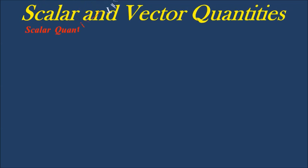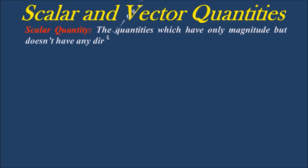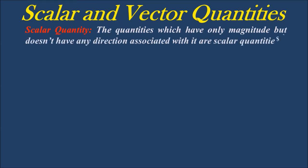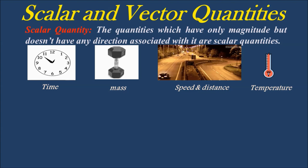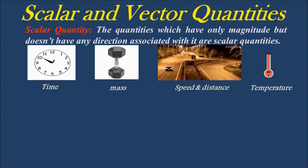The quantities which have only magnitude but don't have any direction associated with them are called scalar quantities. Examples of scalar quantities are: time, mass, speed, distance, temperature, length, area, volume, work, energy, etc.